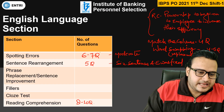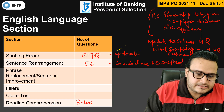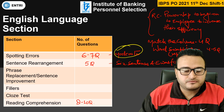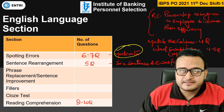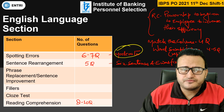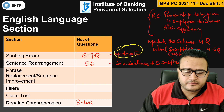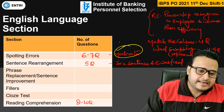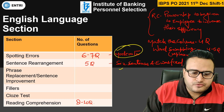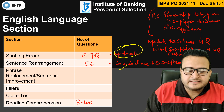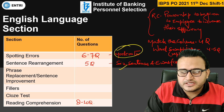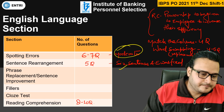English Language section: spotting errors had 6 to 7 questions and people are saying these questions were of moderate in nature — they couldn't find which sentence given is correct. Please let me know what the scenario was with you. Sentence arrangement had 5 questions with 6 sentences, where the 6th sentence — that was E — was fixed.